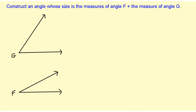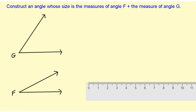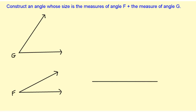So if I take this example of having angle F and angle G, I want to construct an angle that has the measure of F plus G. In order to do that, first I'm going to copy angle F, so I'm going to draw my ray.